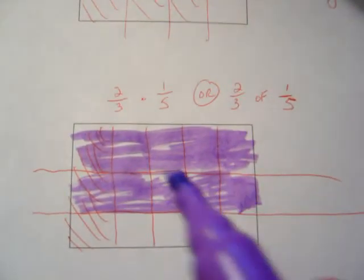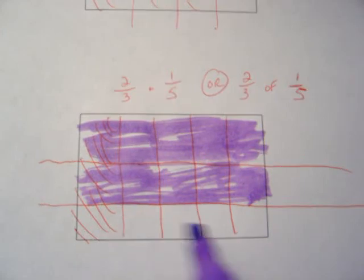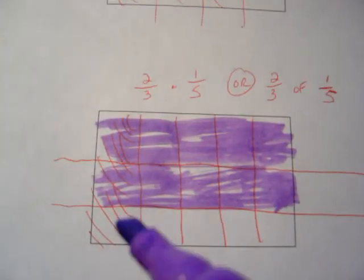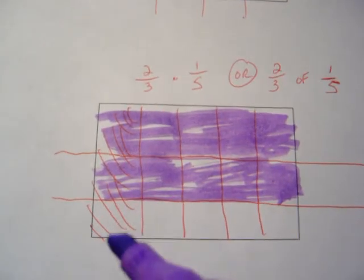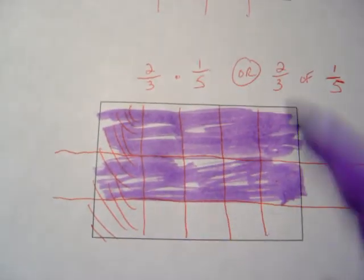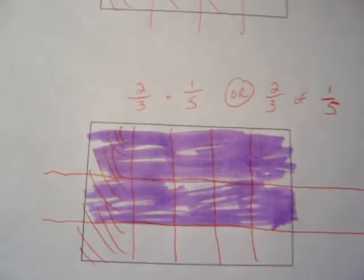I just need to shade 2 of those 3 equal pieces. Okay? 2 thirds, 2 rows of the 3, 2 of the 3 equal pieces, and I started with the 1 fifth. That was 1 column out of the 5, this one out of the 1, 2, 3, 4, 5. And now let's look at what happened here.